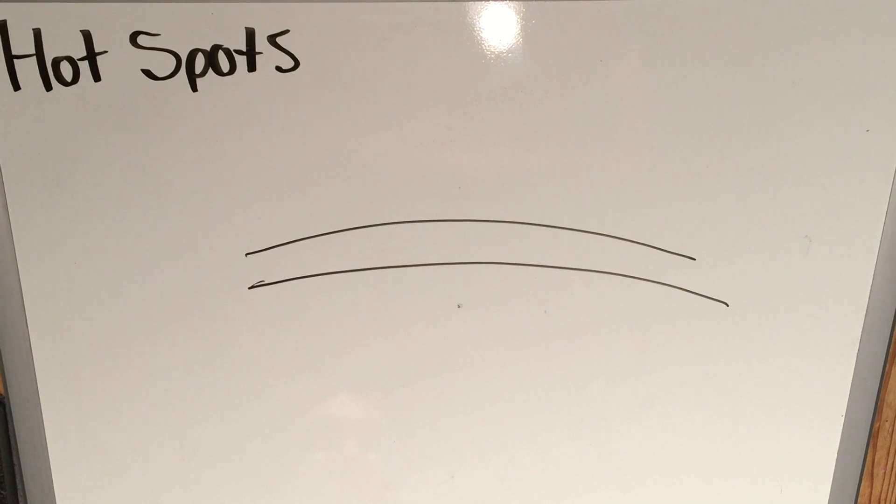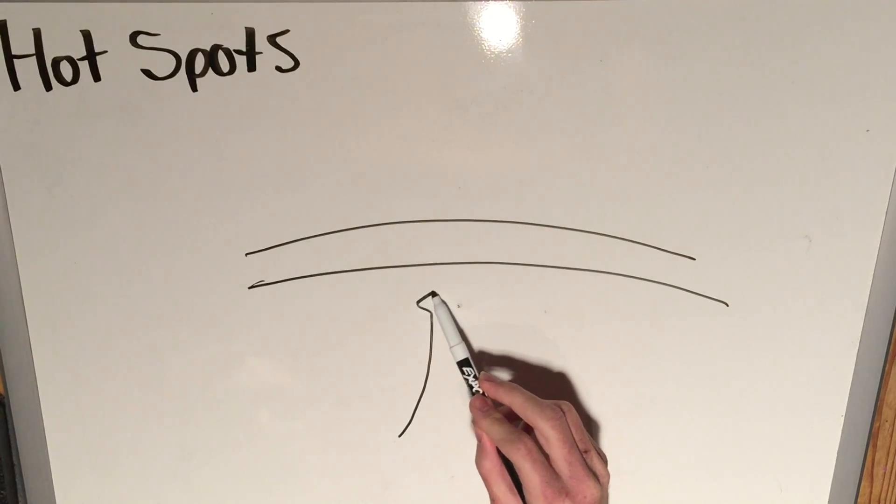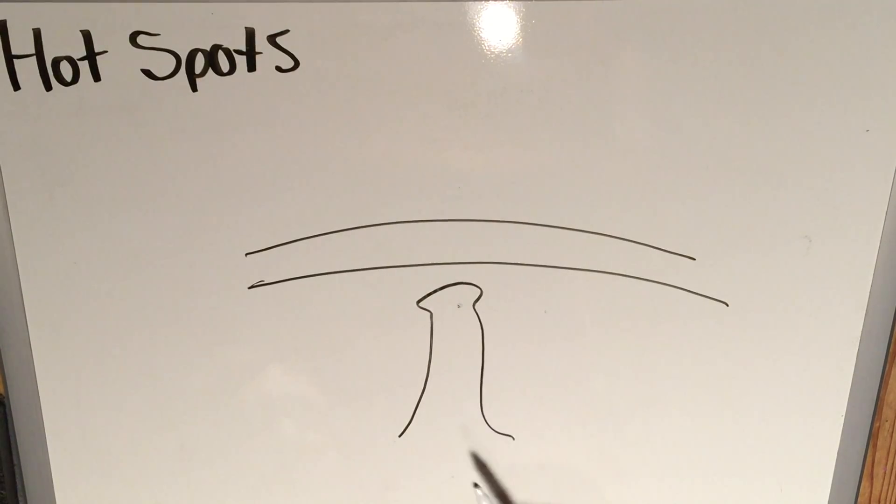Magma plumes within the mantle that rise and reach the surface. So frequently when you see them drawn on diagrams, they look sort of like mushroom clouds rising up. It could look something like that, maybe sort of like a mushroom shape.